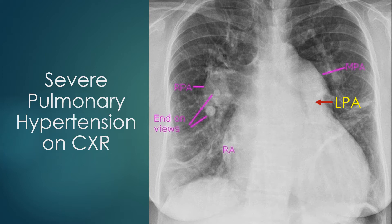End-on views of a few pulmonary arteries are also seen. The presence of end-on views of multiple pulmonary arterial branches would suggest a significant left-to-right shunt as the cause of pulmonary hypertension.